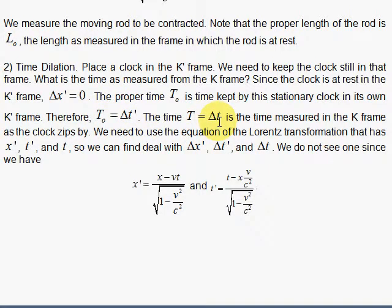And delta T prime in its K prime frame, that's the proper time of the clock as it ticks away. And then in the laboratory frame as we measure it zip by, this will be the time T that we measure delta T. So I want an equation that has delta T, delta T prime, and delta X prime.